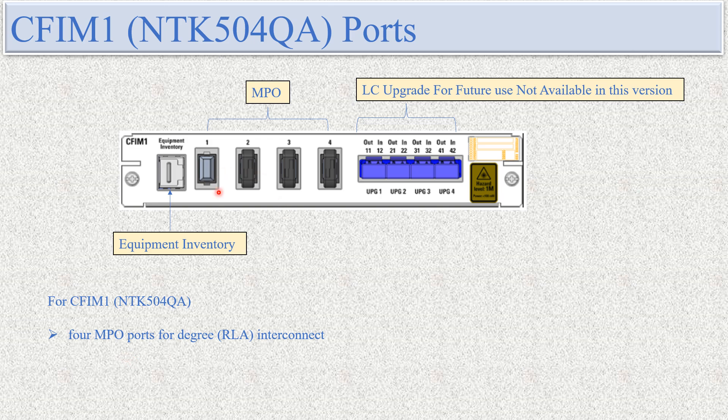Two fiber pairs are not used from the 12 fibers inside the MPO port. All four ports are internally connected with each other. MPO port 1 is connected to ports 2, 3, and 4. MPO port 2 is connected with 1, 3, and 4. MPO port 3 is connected with MPO1, MPO2, and MPO4. MPO port 4 is connected with MPO2, MPO3, and MPO1. Each of the four MPO ports is internally connected with every other port via sub-fibers.